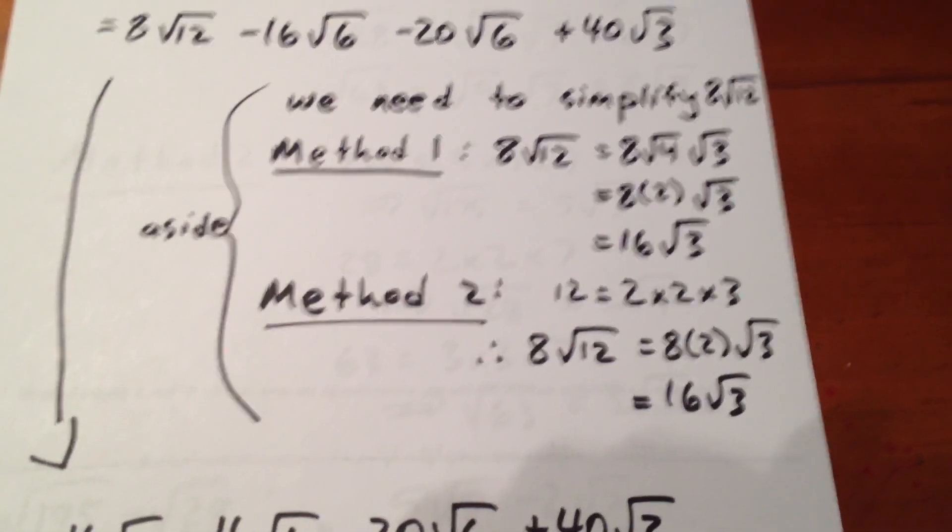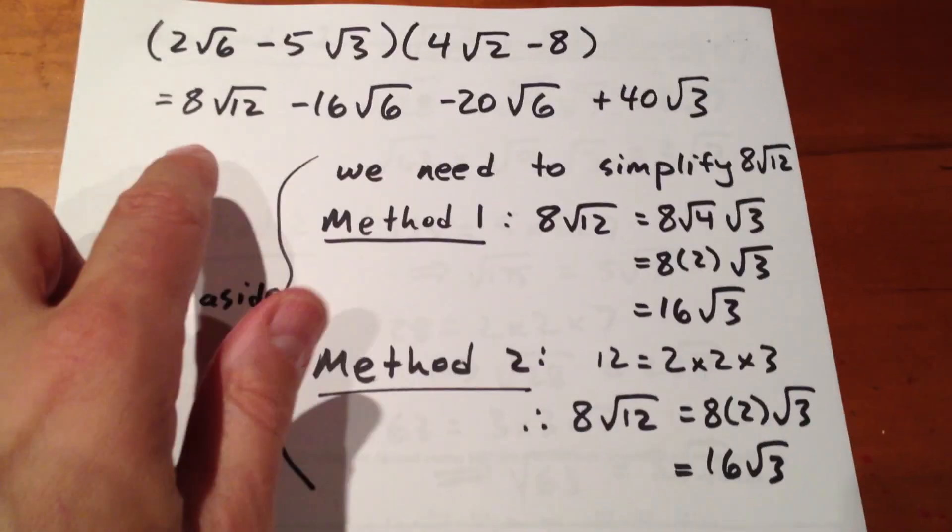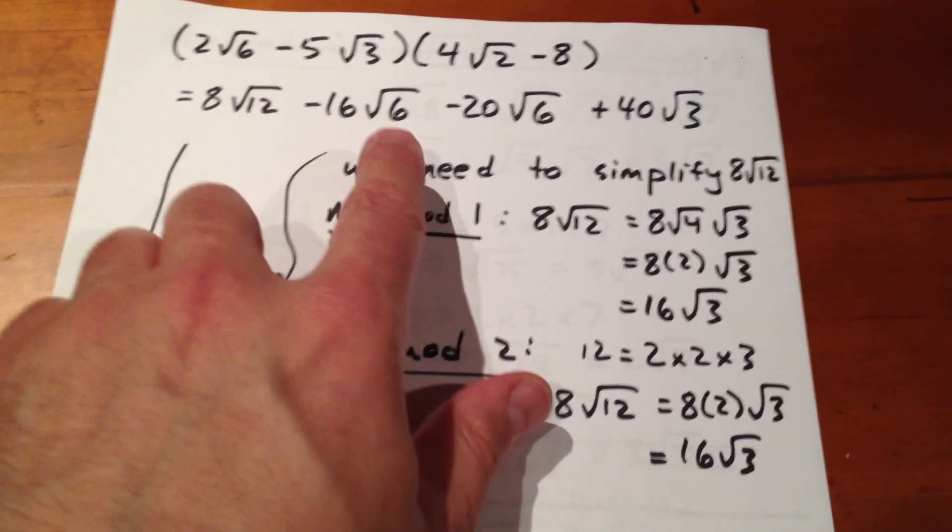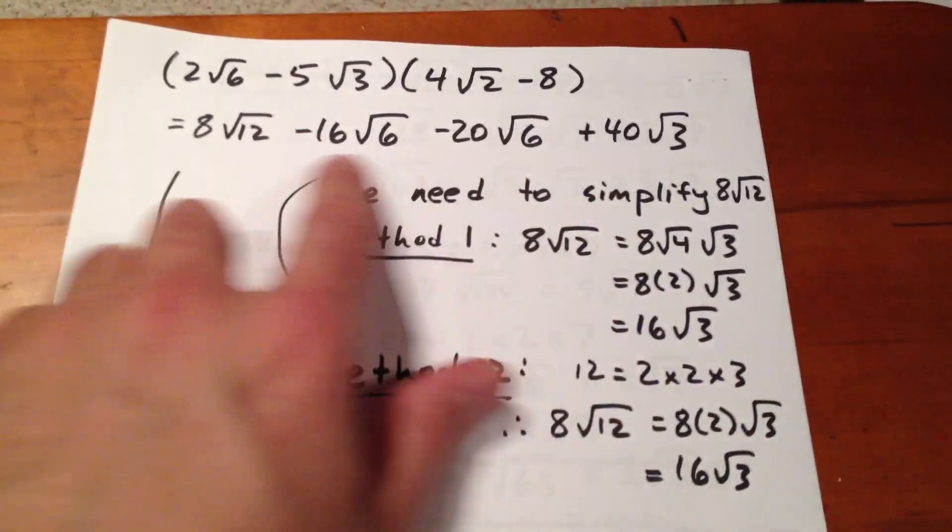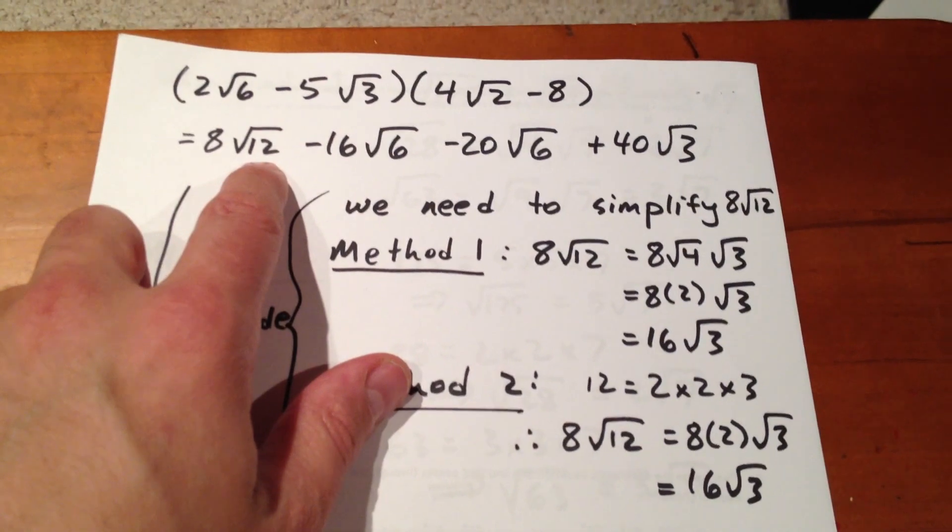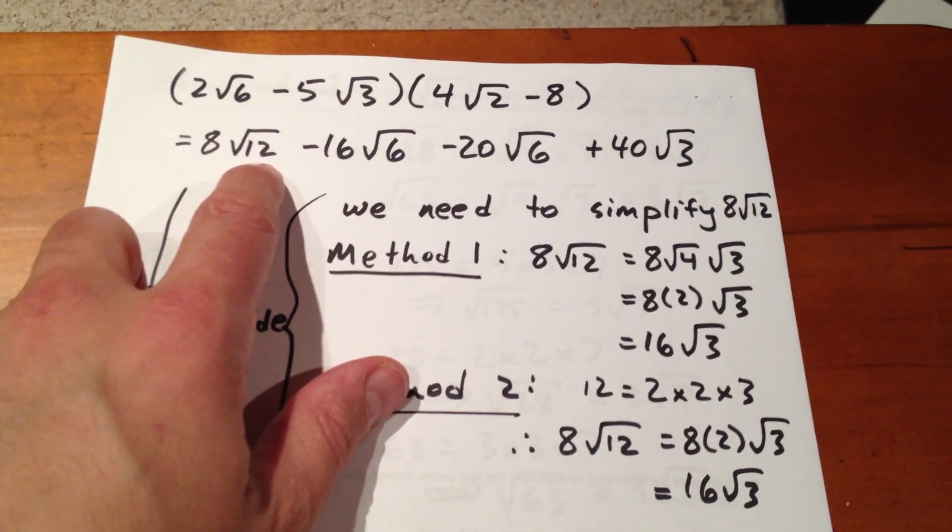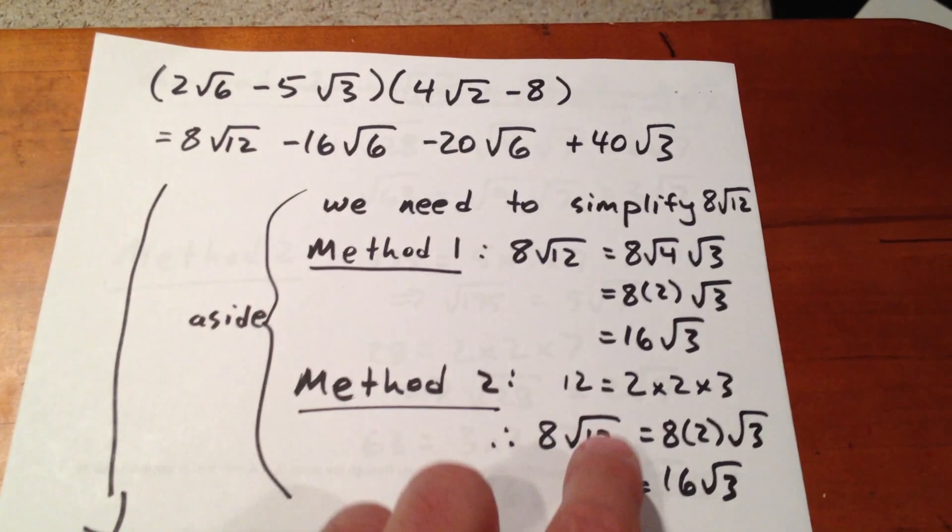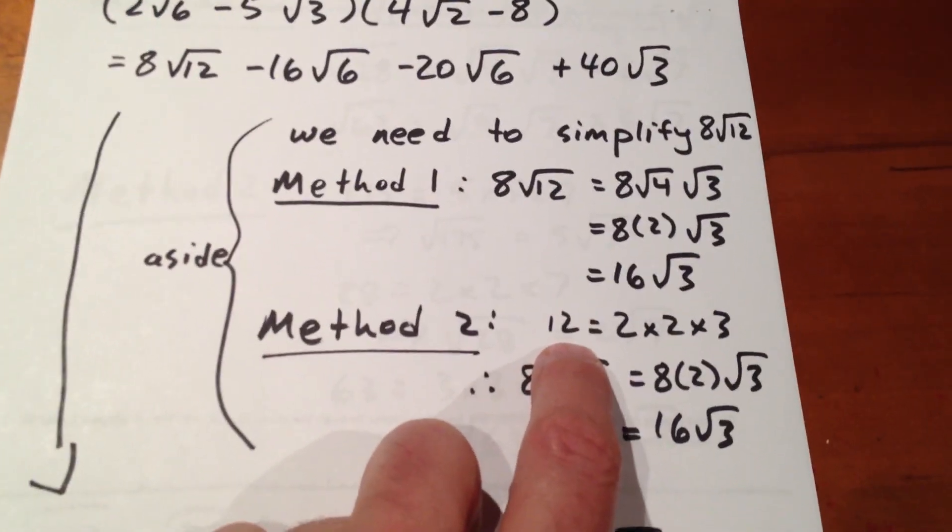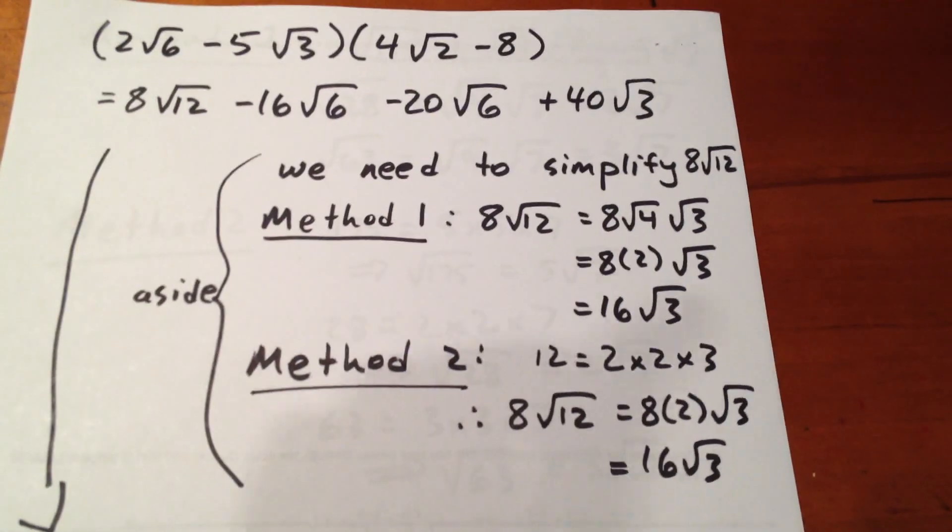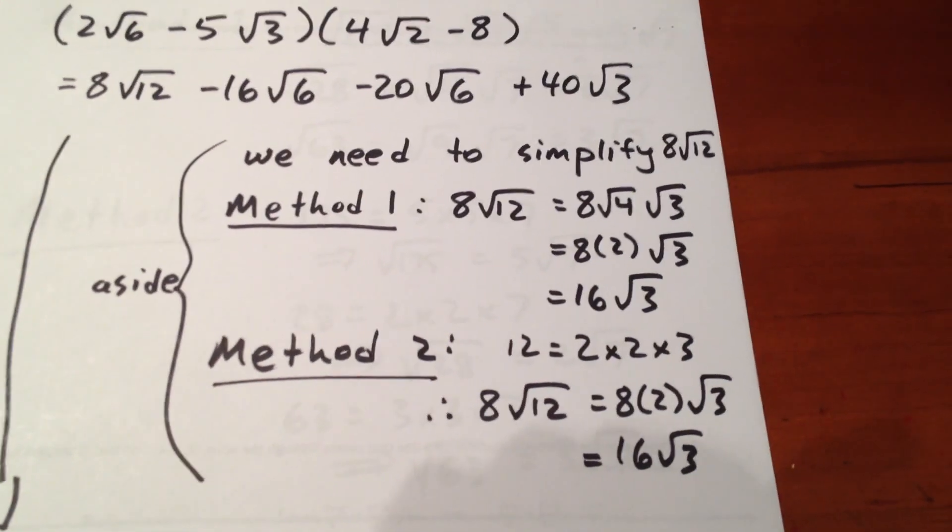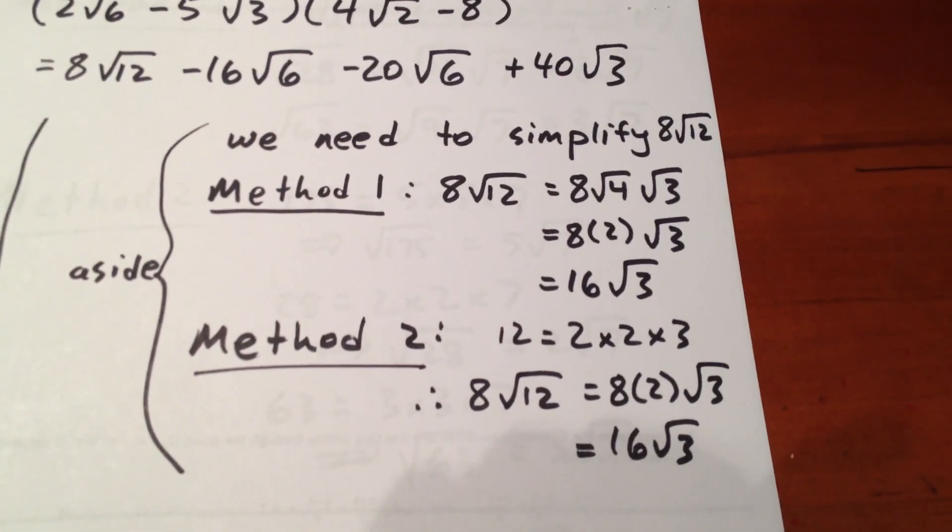Method 2: we take a look at the irrational factors of each term, and we see that the only one we can simplify is √12, because it's the only one with a perfect square that divides evenly into it. So we look at the number 12 itself and determine its prime factors: 12 equals 2 times 2 times 3.